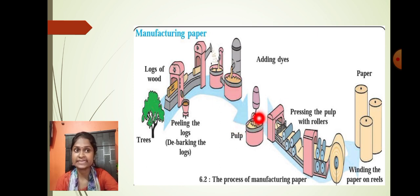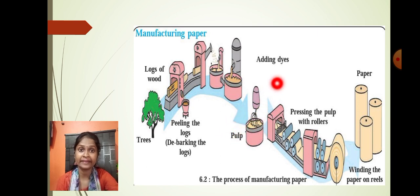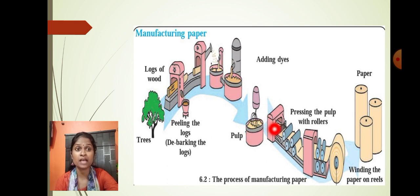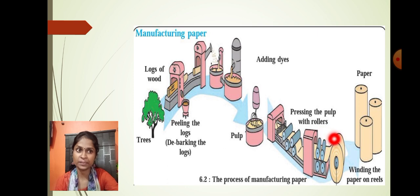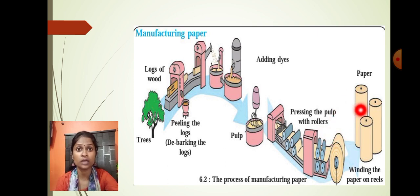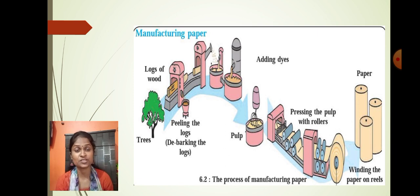Once the pulp is obtained by soaking in the chemical, we can add dyes to it to impart color and strength to the paper. And later on, this pulp is passed through rollers to obtain the paper. Once the paper is obtained, it is wound around a reel. This is how paper has been manufactured with the help of pine trees in industries.